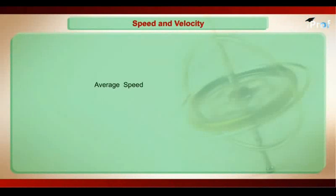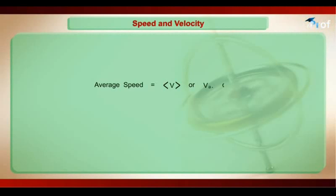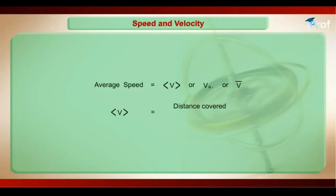Because in different time intervals, the average speed of your body may be different. Average speed can be written like this: either V_average, or V-bar. And average speed is equal to distance covered by your body divided by time interval.